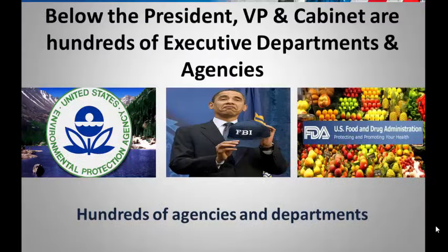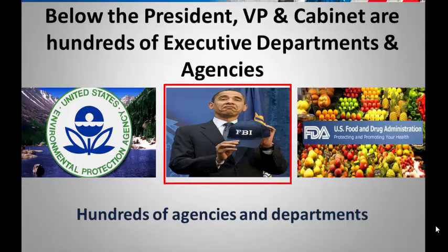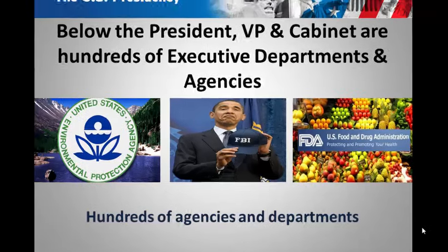Below the President, VP, and Cabinet are hundreds of executive departments and agencies that help the President enforce the law. Organizations like the EPA — the Environmental Protection Agency — the FBI, which is the Federal Bureau of Investigation, and the FDA, or the Food and Drug Administration, making sure our food and medicines are safe. These are your typical executive agencies.